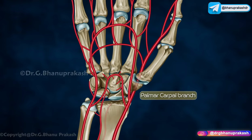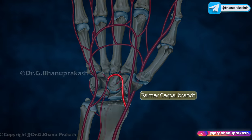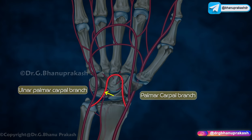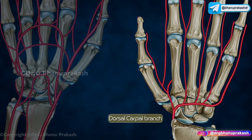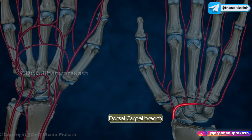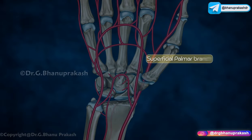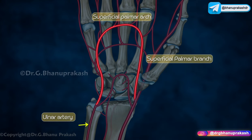Palmar carpal branch anastomoses with the ulnar palmar carpal branch to form the palmar carpal arch. Dorsal carpal branch anastomoses with the ulnar dorsal carpal branch to form the dorsal carpal arch. Superficial palmar branch passes superficial to the flexor retinaculum and joins with the ulnar artery to form the superficial palmar arch.